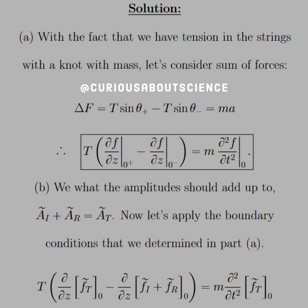Part A is a direct result of the Newtonian force diagrams. With tension in the strings and a knot of mass M, the sum of forces gives: the change in force equals T sine theta plus minus T sine theta minus equals MA. We need to consider the tension at the boundary to the left and the right, and since F equals MA, we need the time derivative at the boundary as well.